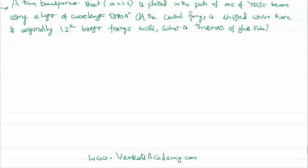Hello everyone, welcome to this video lesson. In this video lesson we are solving a problem on Young's double slit experiment. Let me read out the problem: A thin transparent sheet of refractive index 1.6 is placed